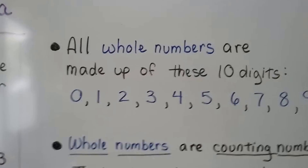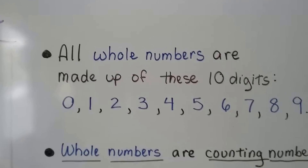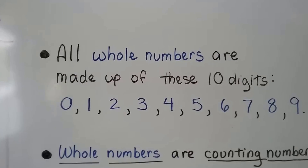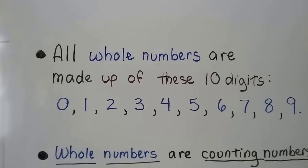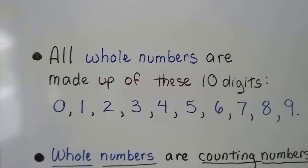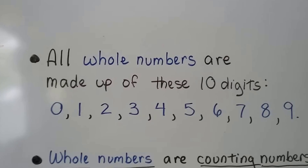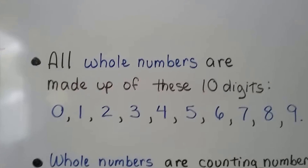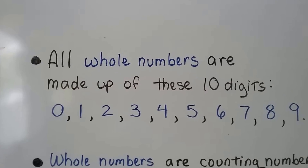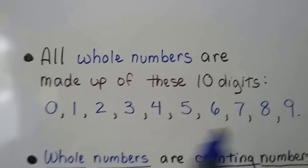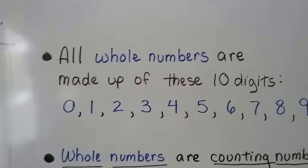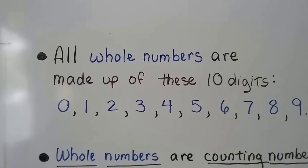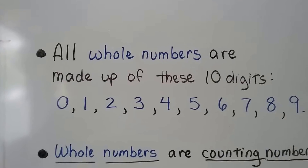All whole numbers are made up of these 10 digits: 0, 1, 2, 3, 4, 5, 6, 7, 8, 9. Depending on how many place values there are, each position is going to have one of these digits in its place value.